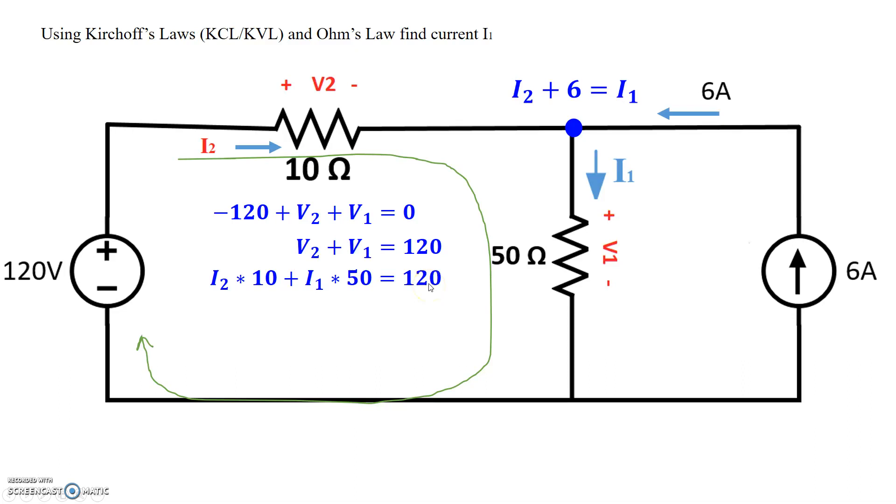Now, what are we interested in? We're interested in finding I1. So we have two expressions right here. Two expressions. One expression has 50I1 plus 10I2 equals 120, and the second expression has I2 plus 6 equals I1. So we have two expressions and two unknowns. We could easily solve this using any simultaneous equation solving technique.